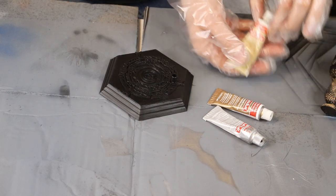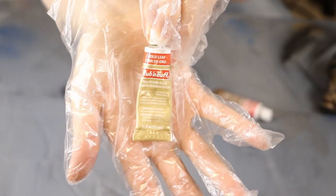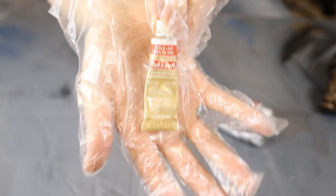So this is what Rub'n Buff looks like. And they come in lots of different colors. The most common ones you're going to see are gold and silver.